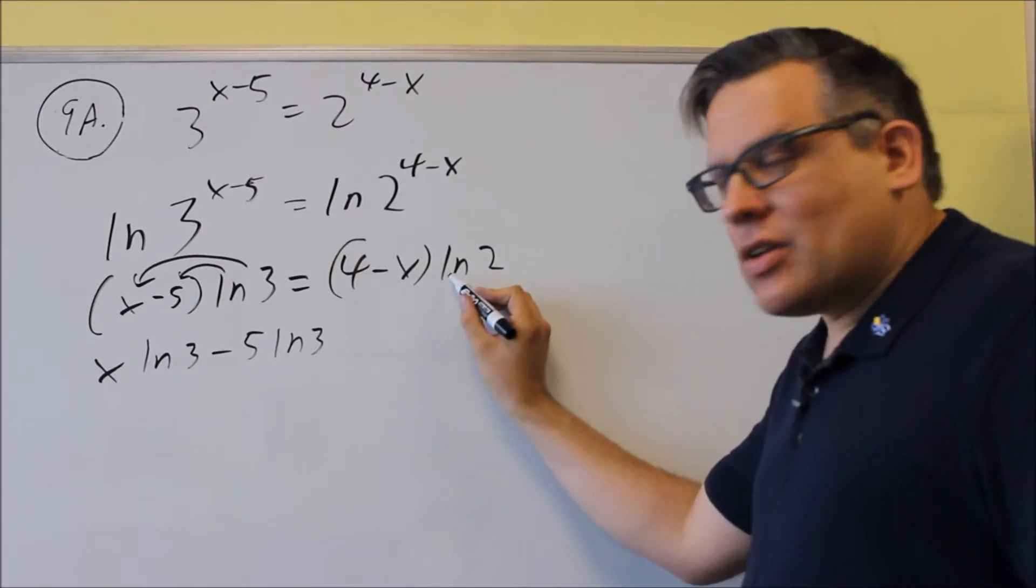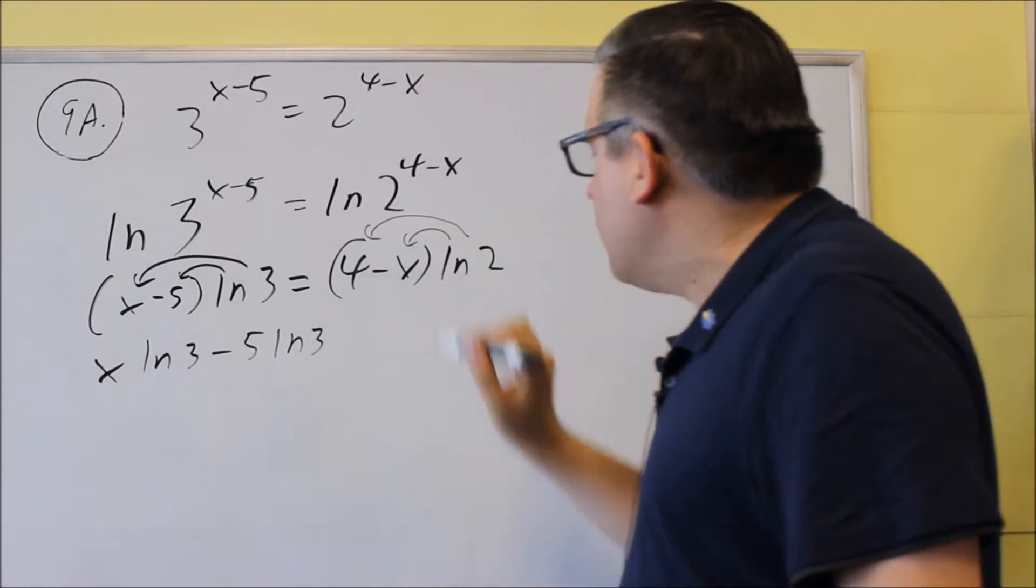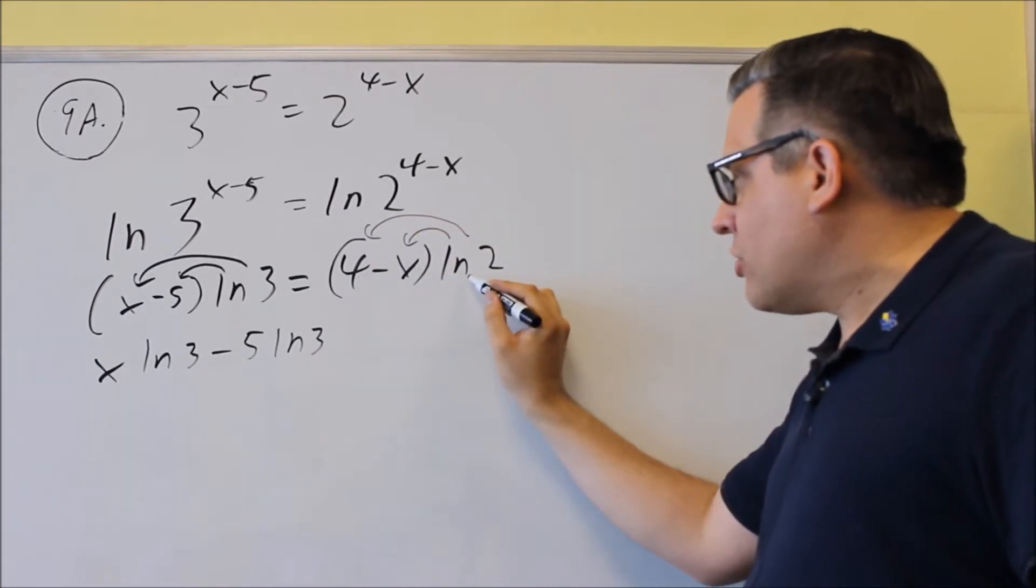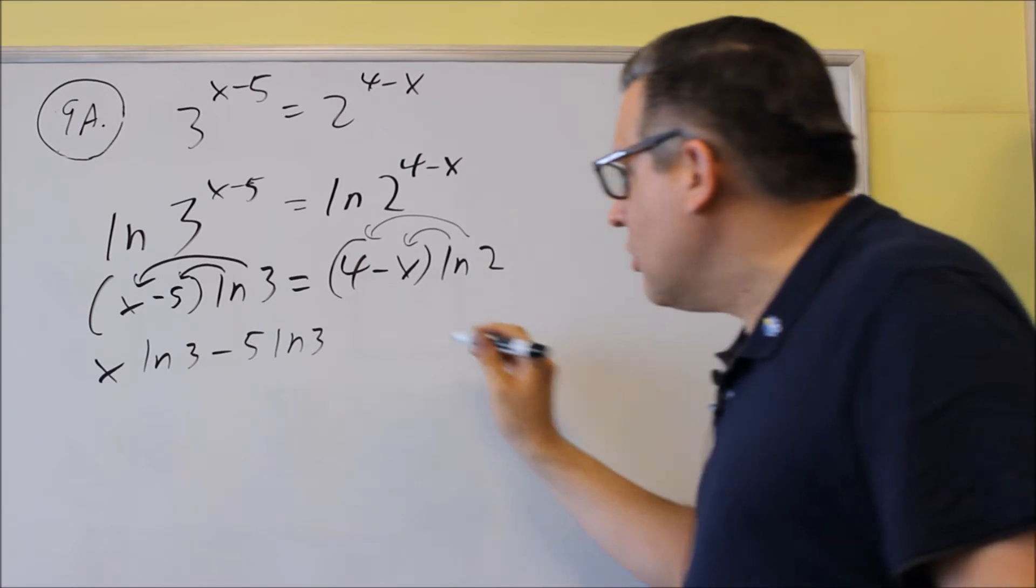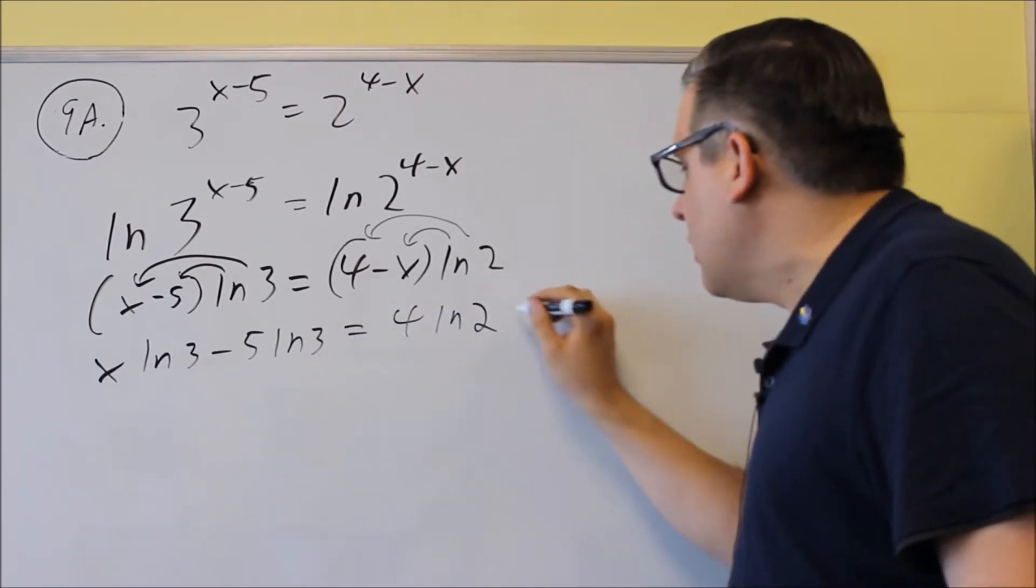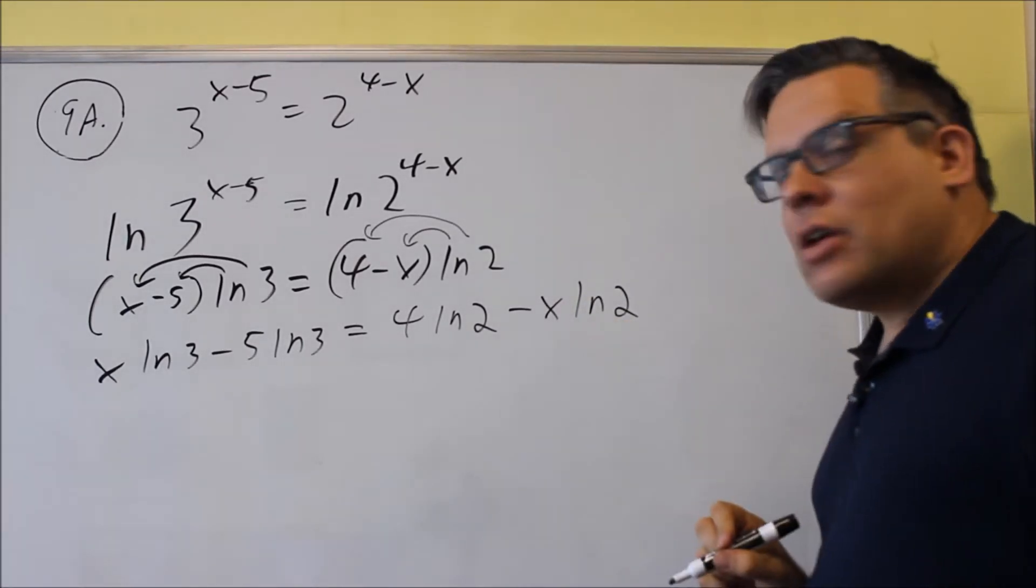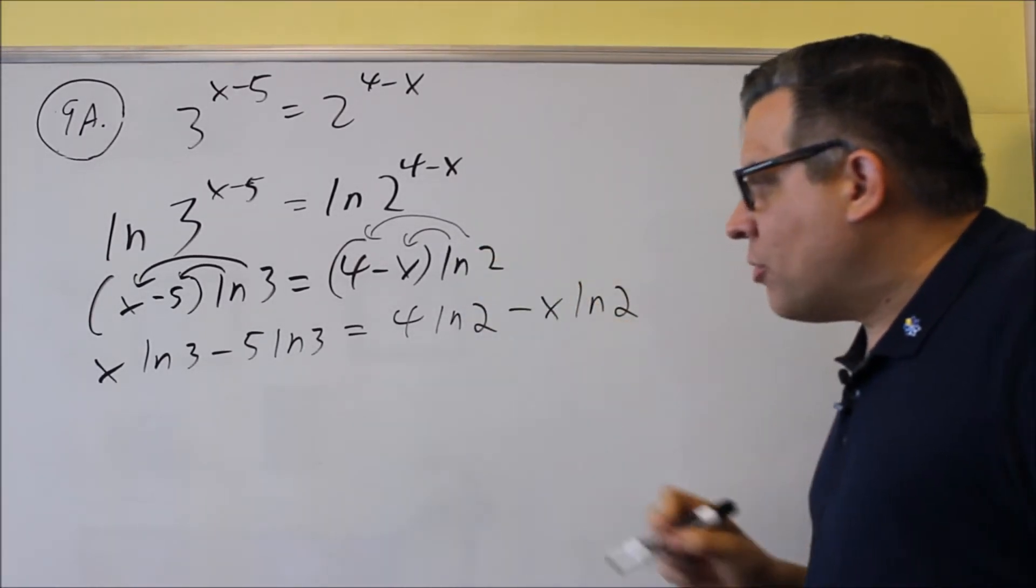We're going to repeat the same process here. We're going to distribute the natural log of 2 into each. So again, 4 times ln 2, you can't take 4 times 2. You have to just make it 4 ln 2 on the outside. And you have minus x ln 2 left over after that. So we're distributing both of those.